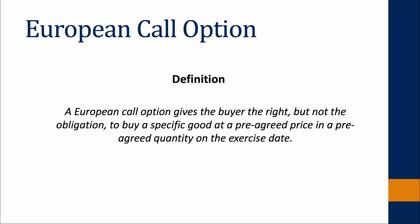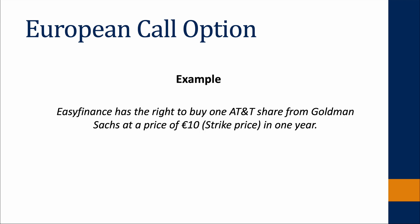A European call option gives the buyer the right, but not the obligation, to buy a specific good at a pre-arranged price in a pre-arranged quantity on the exercise date. An example is when Easy Finance has the right to buy one AT&T share from Goldman Sachs at a price of 10 Euro in one year.